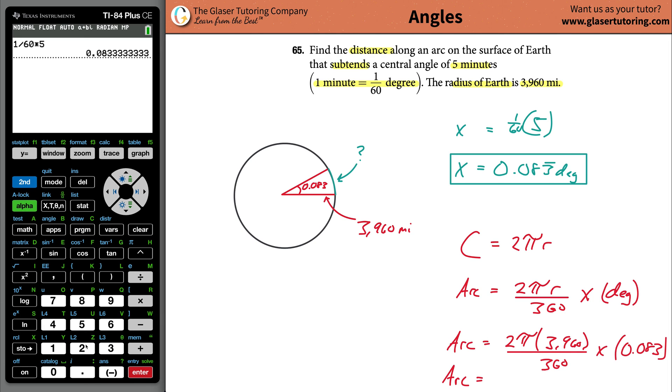So ready? Let's do it. 2 times now second pi. All right, times then 3,960. And then divide that. You can if you want at this point. It doesn't really matter. 360. And then multiply it by the 0.083. I want this exact answer, though.